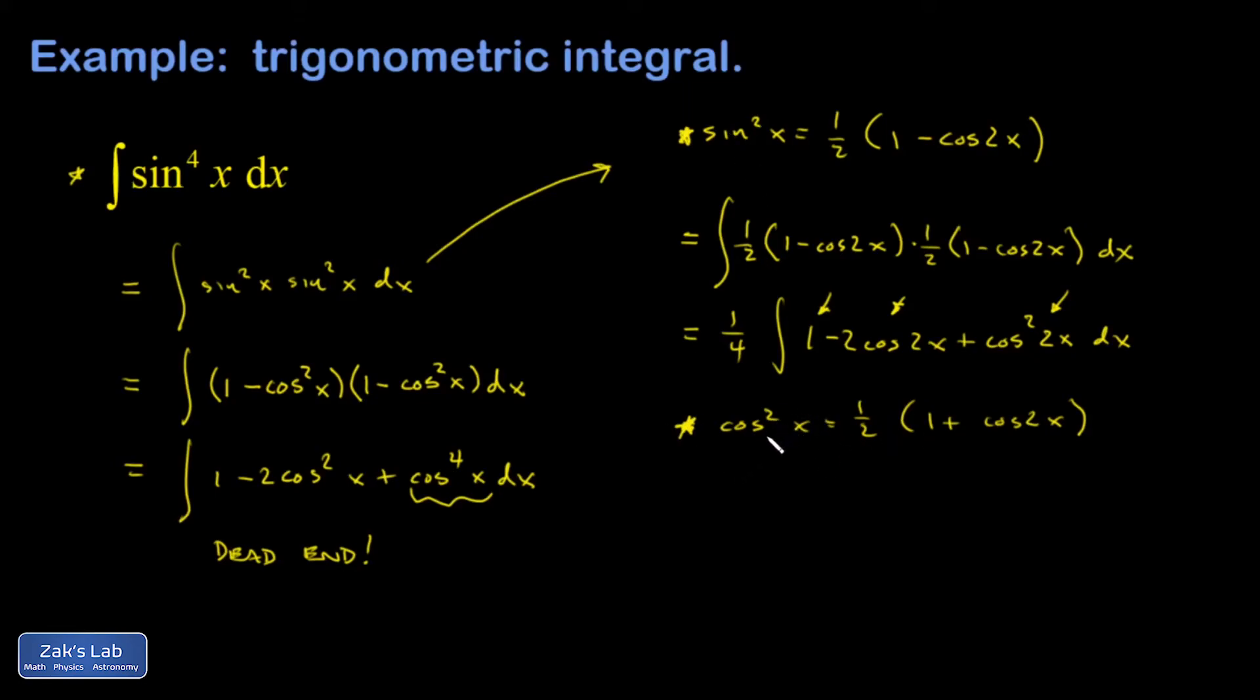So let's apply this thing. Cosine squared of x is 1 half times 1 plus cosine 2x. So this is going to be 1 half times 1 plus cosine of twice this angle, which is 4x.